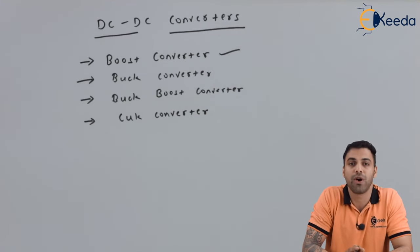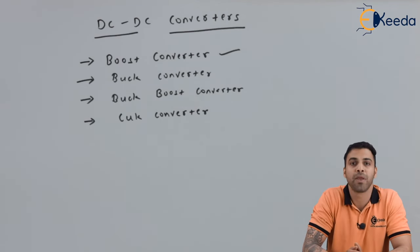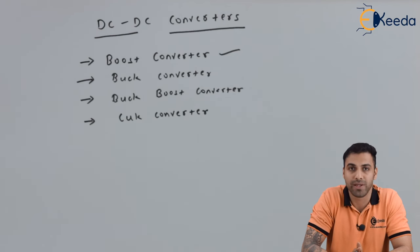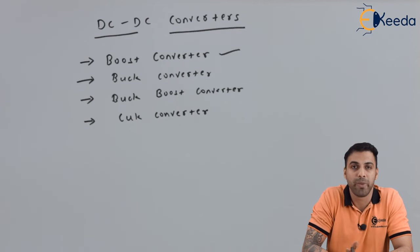The buck-boost converter, as the name suggests, can either convert a low value of DC to a high value of DC or a high value of DC to a low value of DC. And the cuk converter is a new converter that comes into existence, which we will be discussing in detail in the end of this lecture.